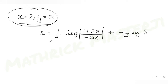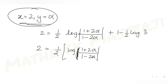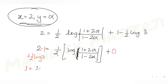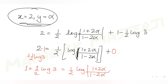Solving further: 2 = (1/2) log|(1 + 2α)/(1 - 2α)| + 1 - (1/2) log 3. Moving terms: 2 - 1 + (1/2) log 3 = (1/2) log|(1 + 2α)/(1 - 2α)|, which gives 1 + (1/2) log 3 = (1/2) log|(1 + 2α)/(1 - 2α)|.